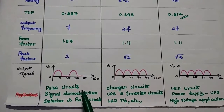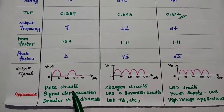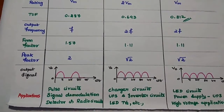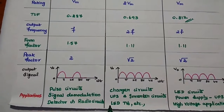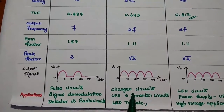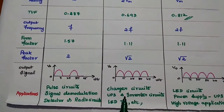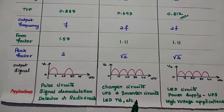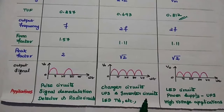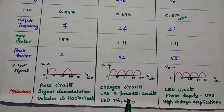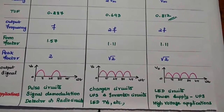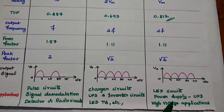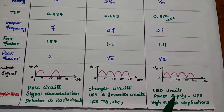Finally, applications: half wave rectifiers are mainly used in pulse circuits, signal demodulation circuits, and as detectors in radio circuits. The full wave rectifier with center tap transformer is used in charger circuits, UPS (uninterrupted power supply) circuits, inverter circuits for rectification, LED TVs, etc. The bridge rectifier is widely used in high voltage applications, especially in power supply circuits, UPS, LED circuits, etc.